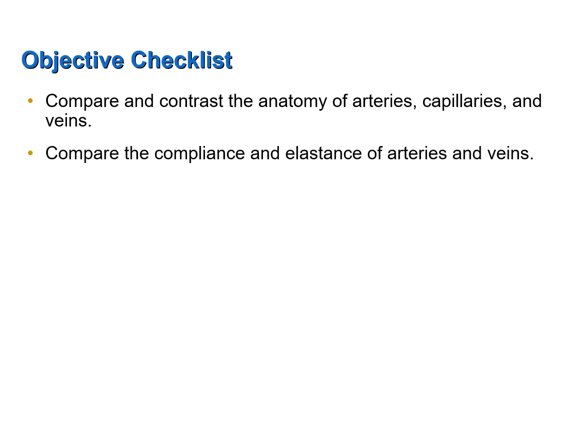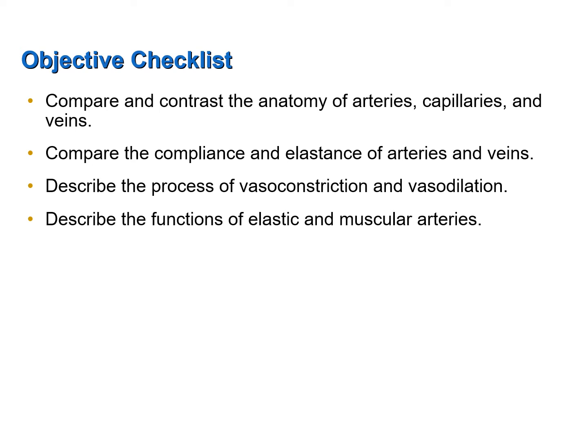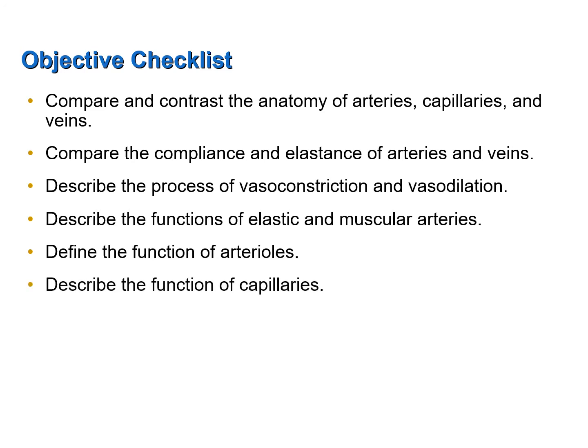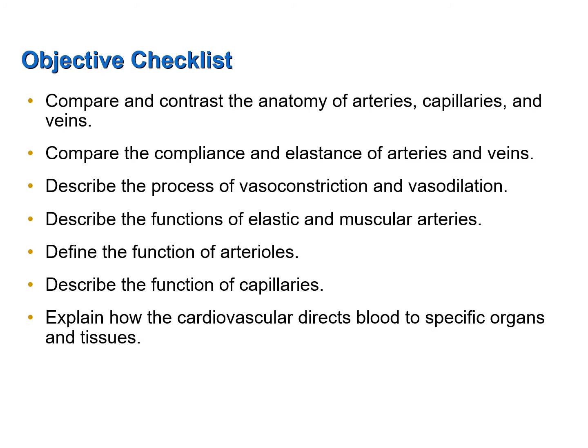Compare the compliance and elastance of arteries and veins. Describe the process of vasoconstriction and vasodilation. Describe the functions of elastic and muscular arteries. Define the function of arterioles. Describe the function of capillaries. Explain how the cardiovascular system directs blood to specific organs and tissues. And lastly, describe the three mechanisms or structures which help move blood through veins.